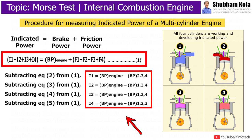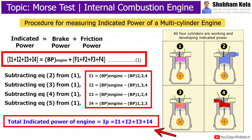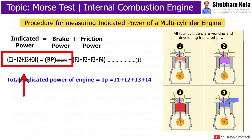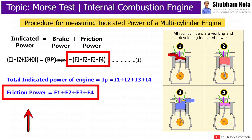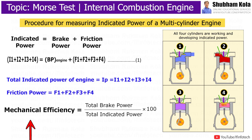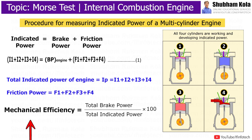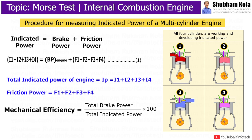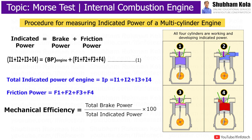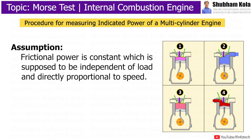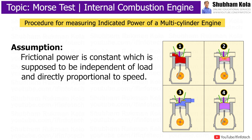The total indicated power of the engine is calculated by adding i1, i2, i3, and i4. By substituting the value of indicated power and total brake power in equation 1, we get the value of frictional power. Mechanical efficiency is calculated by the formula: total brake power divided by indicated power, multiplied by 100. In this way, the Morse test is used to calculate indicated power, frictional power, and mechanical efficiency, by assuming the frictional power of each cylinder remains constant and is independent of load but directly proportional to speed.